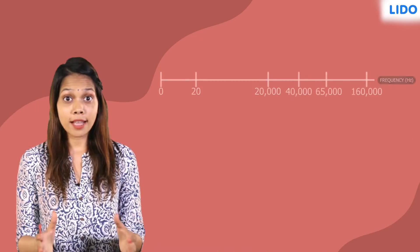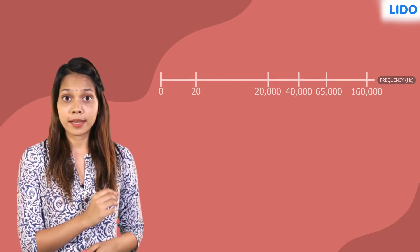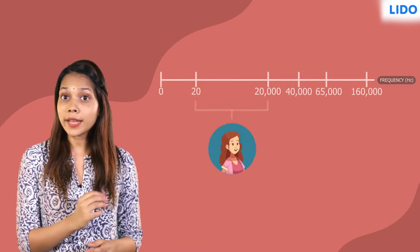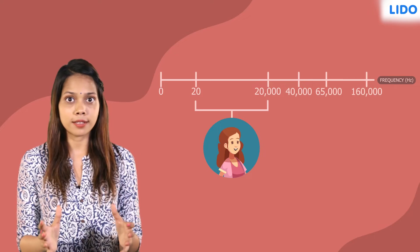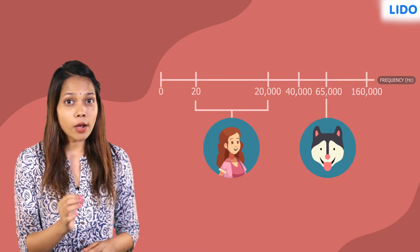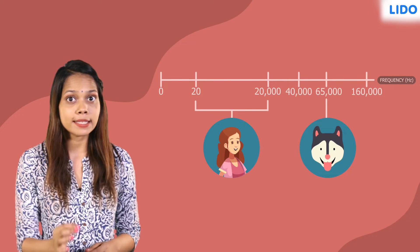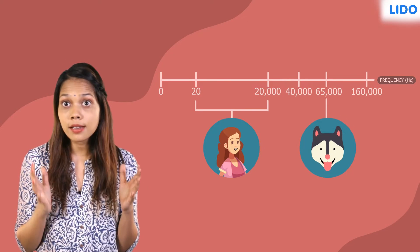High pitch sounds are usually shrill like this, while low pitch sounds are usually soft like this. Humans can hear sounds approximately within the frequency of 20 Hertz to 20,000 Hertz, while dogs can hear sounds up to 65,000 Hertz.